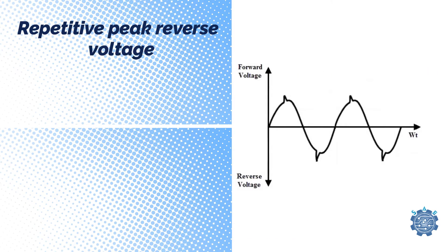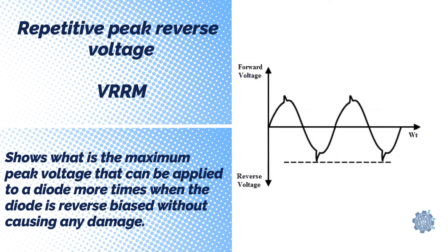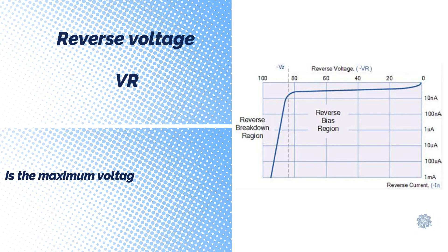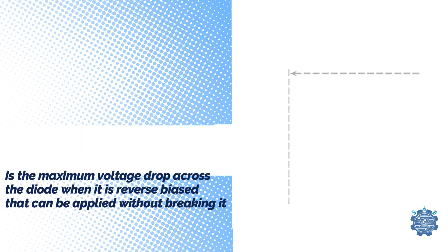Repetitive Peak Reverse Voltage shows what is the maximum peak voltage that can be applied to a diode more times when the diode is reverse biased without causing any damage. Reverse Voltage is the maximum voltage drop across the diode when it is reverse biased that can be applied without breaking it.